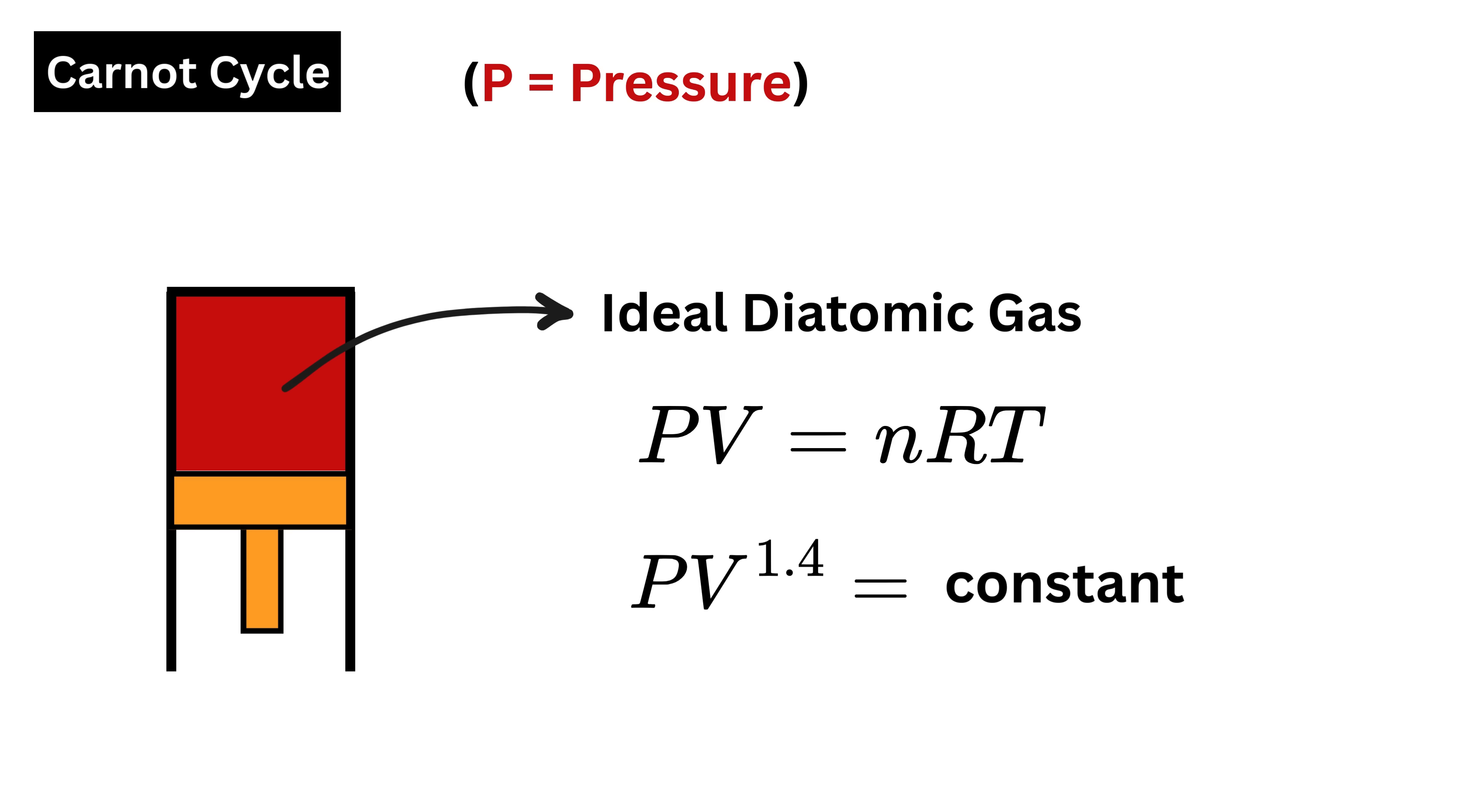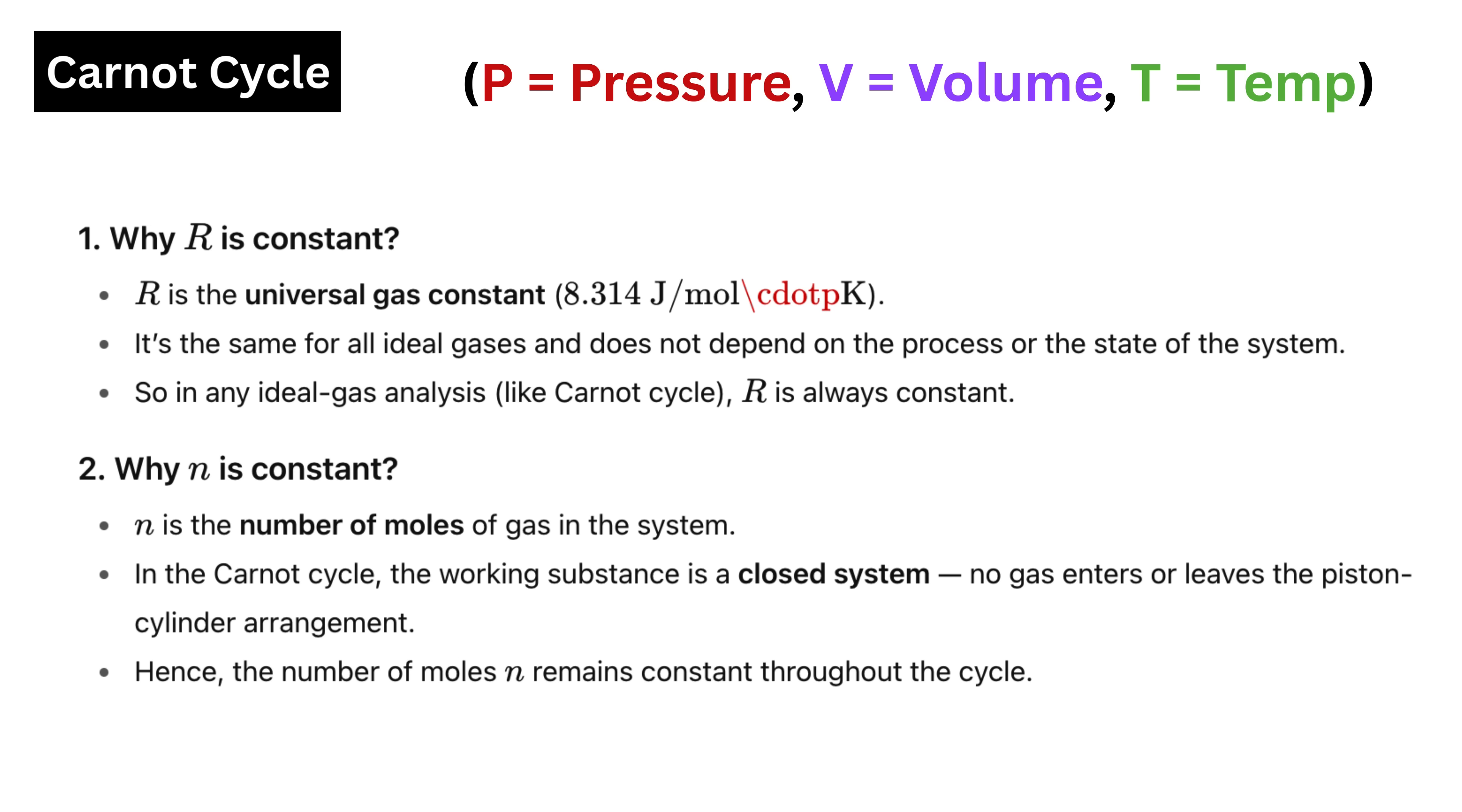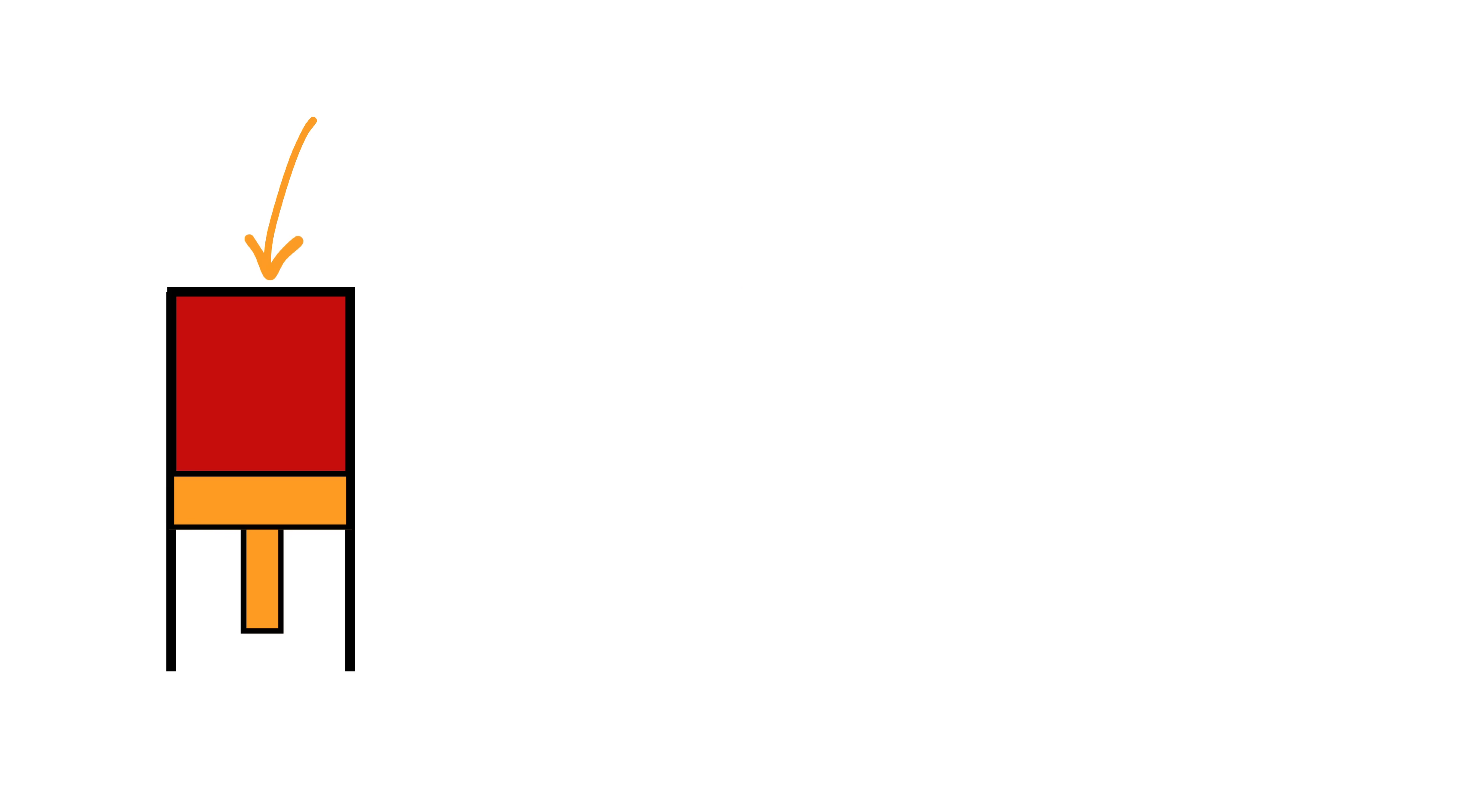Here P is the pressure of the gas, V is the volume of the gas, and T is the temperature of the gas. Consider both n and r as constant for now. Next, this part of the cylinder is in contact with a heat reservoir or an energy source like fire giving heat to the gas.